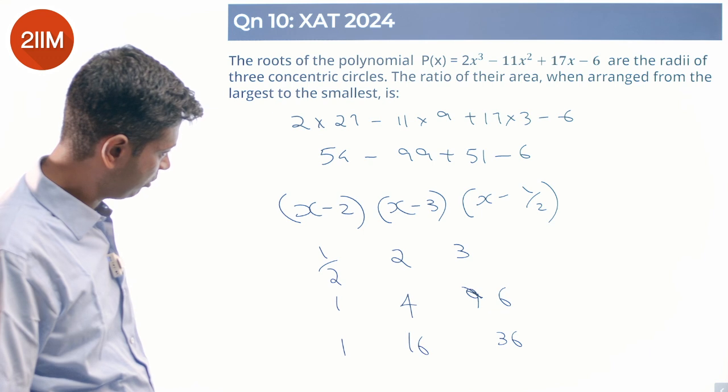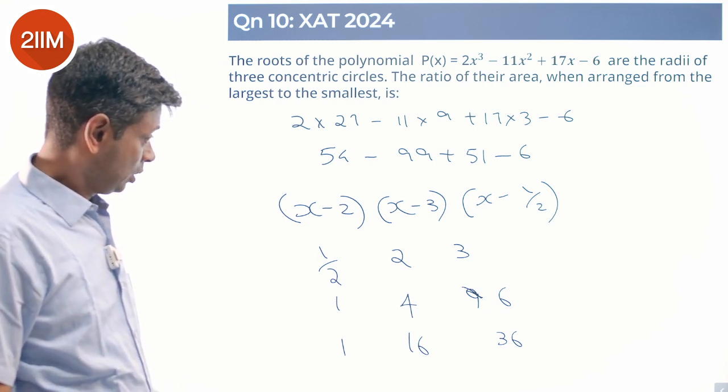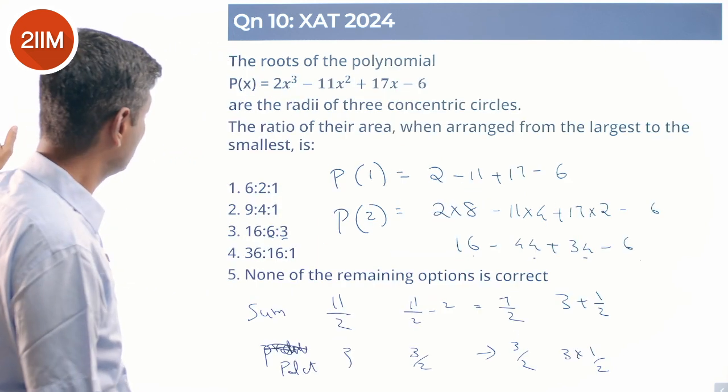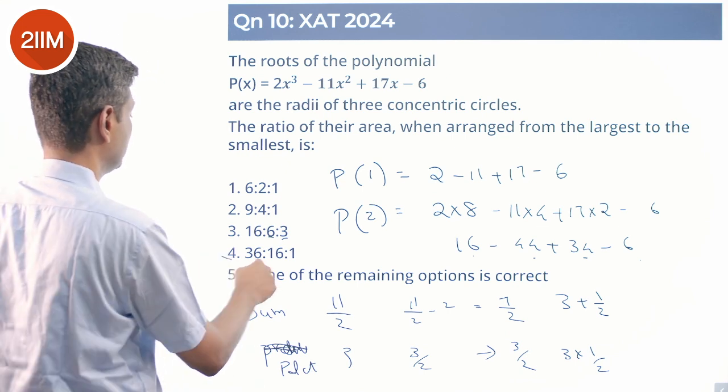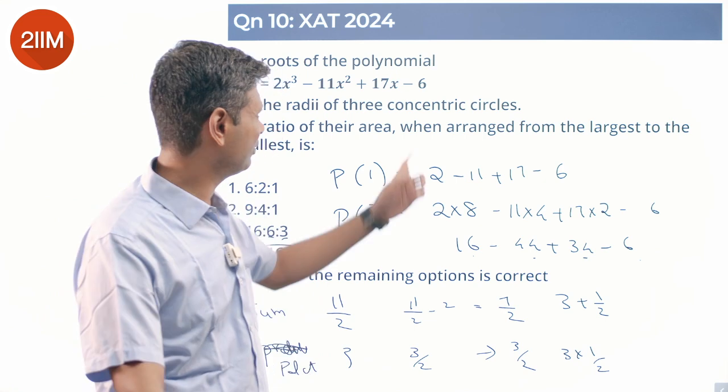1/2, 2, and 3 - ratio 1:4:6. Areas will be squared: 1:16:36. Largest to smallest: 36:16:1. Done.